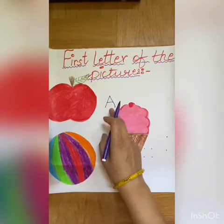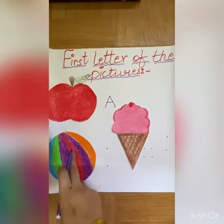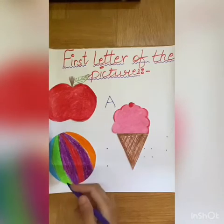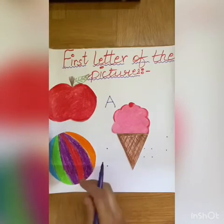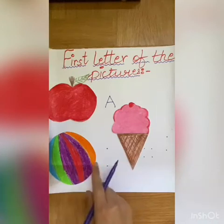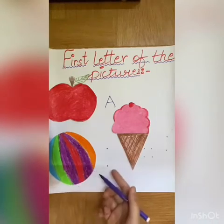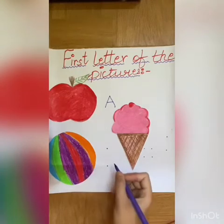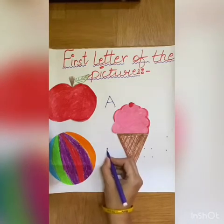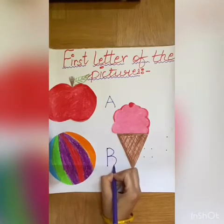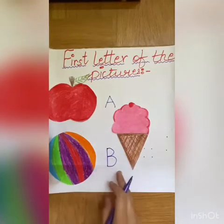Okay children, now see the second picture. What is this? Yes, this is a ball. I am sure children you like to play with a ball. So what will you write here? You will write B, B, ball. And for B, you have to make one straight line and a curve, then again a curve. B, B, ball.